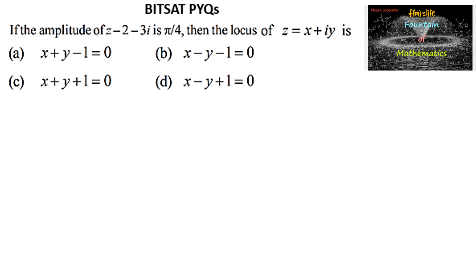If the amplitude of z minus 2 minus 3i is π/4, then the locus of z = x + iy is: We know that if z = a + ib is a complex number and θ is the amplitude of the complex number z, then tan θ = b/a.